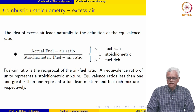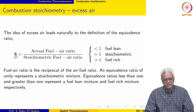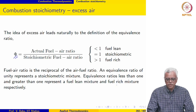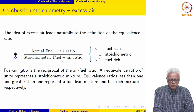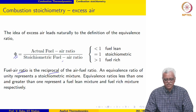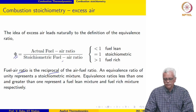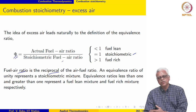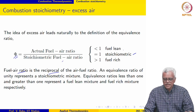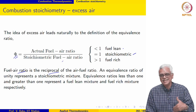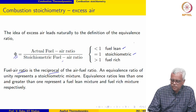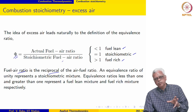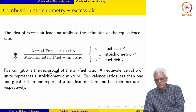The concept of excess air leads to the definition of the equivalence ratio, denoted by the Greek letter uppercase phi (φ). Phi is defined as the actual fuel-air ratio divided by the stoichiometric fuel-air ratio. If φ = 1, the exact stoichiometric amount of air is supplied. If φ < 1, the mixture is fuel lean. If φ > 1, the mixture is fuel rich.